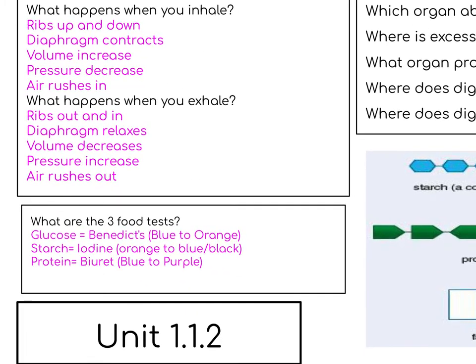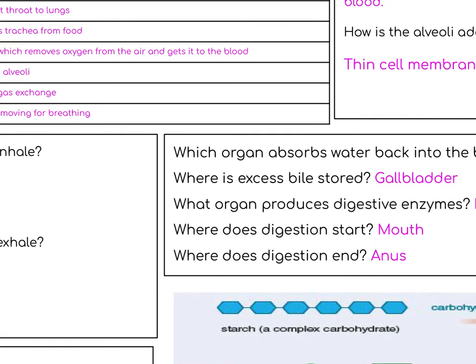The three food tests you need to know: to test for glucose it's Benedict's solution, which goes from blue to orange. To test for starch it's iodine, which goes from orange to blue. And for protein it's biuret, which goes from blue to purple.